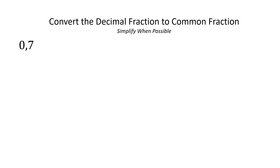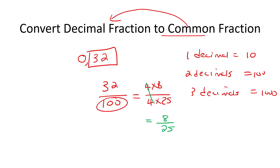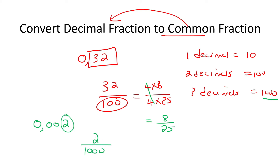Let me do one more example and then we'll move on to the official examples. So let's say we had 0.002. If you look from the back there's one, two, three decimals, so that should make you think of a thousand. So you just take the number, put it over a thousand, and then simplify. I know that a thousand could be written as five hundred multiplied by two, so these could cancel, and at the top there's nothing, so you just put a one over five hundred.